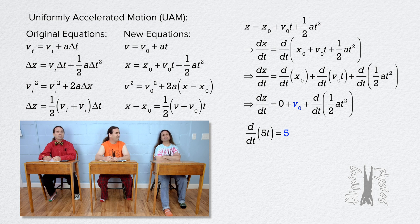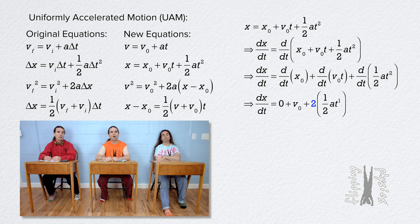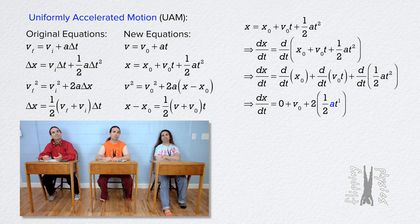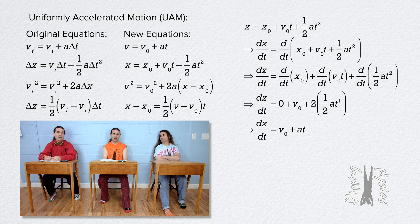Now the derivative with respect to time of one-half acceleration times time squared: we multiply the exponent by the term and raise to the power of 1. The one-half is a constant number, so that stays at one-half. Acceleration is constant — that is what uniformly accelerated motion means, the acceleration is constant — so you just leave it as acceleration. Therefore, the derivative of this position equation with respect to time equals velocity naught plus acceleration times time.